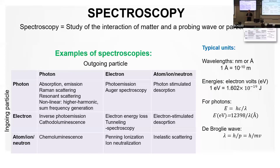My expertise is in photon-in, photon-out spectroscopy mostly. A photon comes in, and if we look at the photon coming out, it's emission, Raman scattering, resonance scattering, different kinds of non-linear optical phenomena, high harmonic generation. If we come in with a photon and look at electrons, we can look at photoemission and Auger electrons. We can come in with an electron and look at photons in cathodoluminescence or inverse photoemission. This would require several books to cover all these spectroscopies.